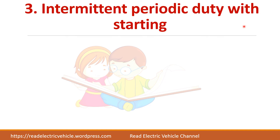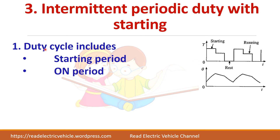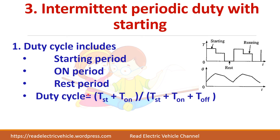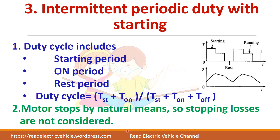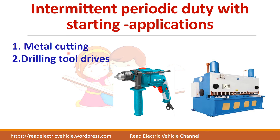Next is intermittent periodic duty with starting losses taken into consideration. Here, the load has a starting period, then a running period, and a rest period. The duty cycle is given by the starting period plus on period divided by the total time period — that is, starting plus on period, divided by starting plus on period plus rest period. We consider only the starting period because stopping of the motor is very fast or occurs by natural means. In case the braking period is also large, we have to consider those losses as well. Applications include metal cutting, drilling, and machine tools.